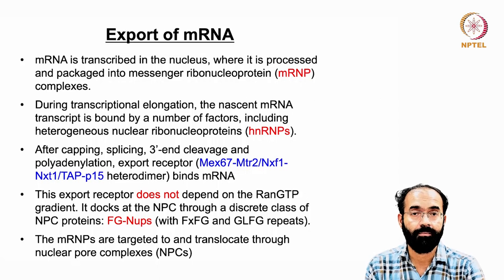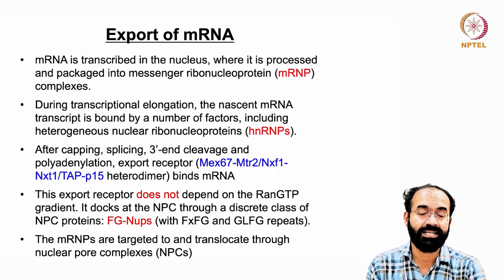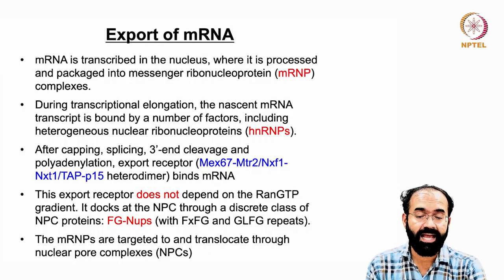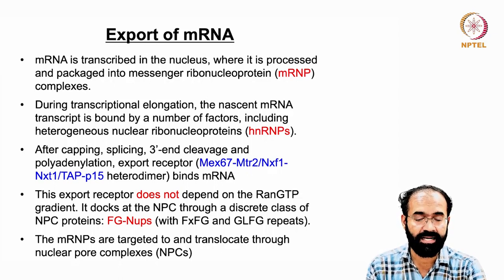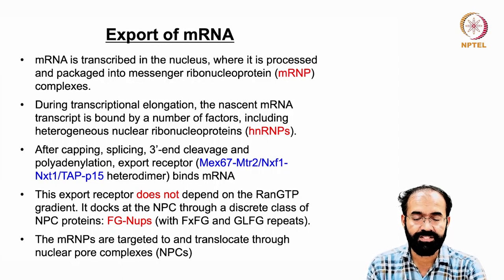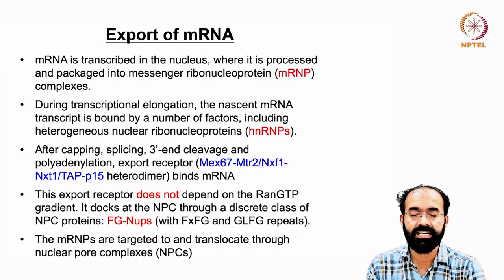This mRNA export receptor does not depend on the Ran-GTP gradient. It docks at the nuclear pore complex through a discrete class of NPC proteins called FG-nups, which contain FXFG repeats — where X is any amino acid and F is phenylalanine — and GLFG repeats, meaning glycine-leucine-phenylalanine-glycine repeats.